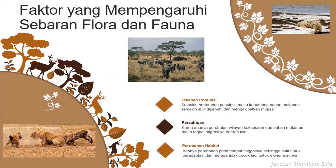Sebelum ibu bahas tentang faktor yang mempengaruhi sebaran, tahukah kalian kalau Indonesia itu ternyata dijuluki sebagai negara mega biodiversiti? Yang artinya, negara dengan keanekaragaman hewan atau fauna dan tumbuhan flora yang sangat tinggi. Dibanding negara-negara lain, negara kita ini paling beragam dalam jenis flora dan fauna. Makanya disebutnya sebagai mega biodiversiti.